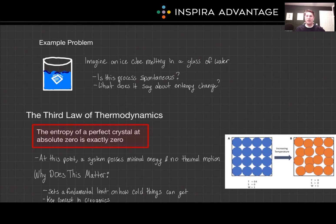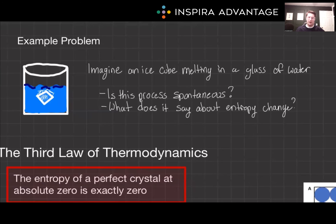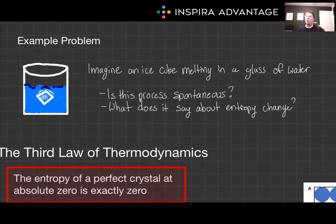Before we get to the last law of thermodynamics, let's take a little interlude with an example problem. Imagine an ice cube — or look at your screen — and put it in a glass of water. It's melting. Is this process spontaneous, and what does it say about the entropy change in the system? Yes, it's spontaneous, assuming it's at room temperature, because it's occurring without external energy input, indicating an increase in entropy as the ice transitions to a more disordered liquid state.